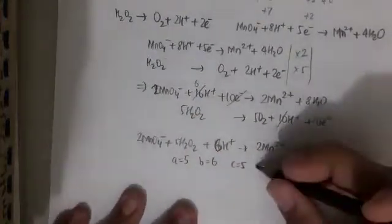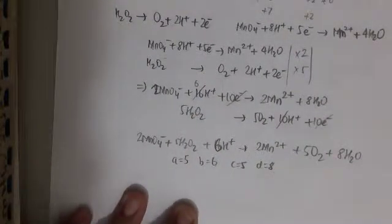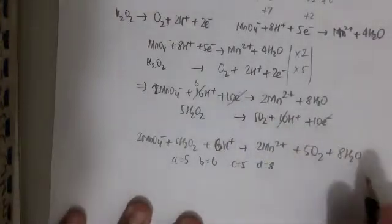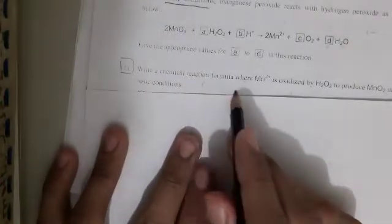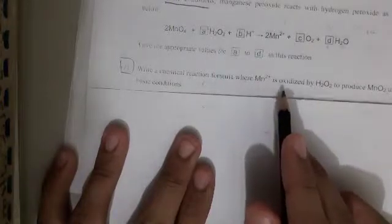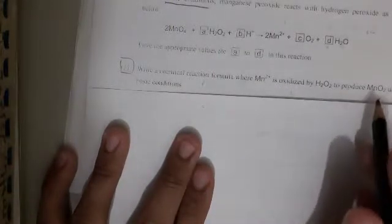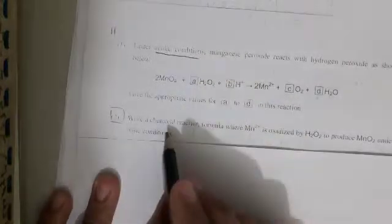So A is 5 (coefficient of H₂O₂), B is 6 (coefficient of H⁺), C is 5 (coefficient of O₂), and D is 8 (coefficient of H₂O). Those are the appropriate values for each coefficient in the redox reaction. We have solved number 1. For number 2, we need to write the chemical reaction formula when manganese ions are oxidized by hydrogen peroxide to produce manganese dioxide under basic conditions.